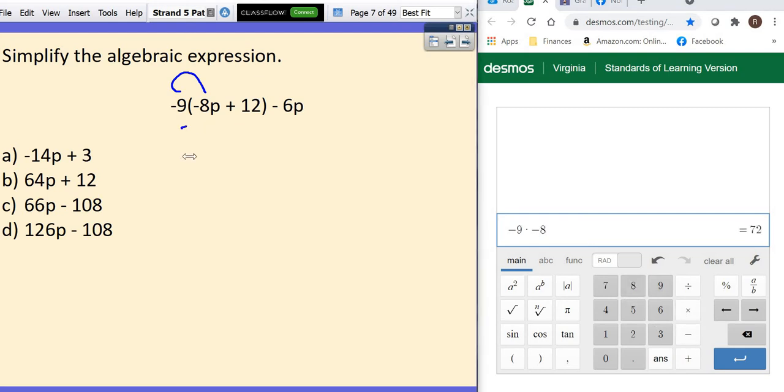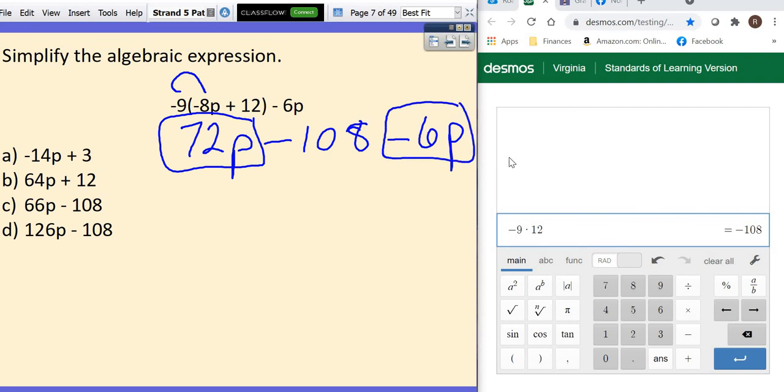which gives you a positive 72 and the p comes along. Then you have the negative 9 times the positive 12, which is negative 108. And then you bring down the negative 6p for our next part of this.